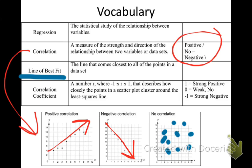The correlation coefficient is something you can get with calculators for more precise data. A value of 1 is a strong positive correlation — points are very tight and close together. Negative one is a strong negative correlation. Anything close to zero is weak — it can be a weak positive or weak negative. You can't have a value bigger than 1 or less than negative 1.